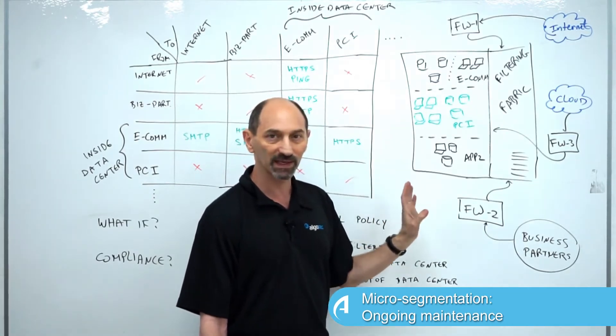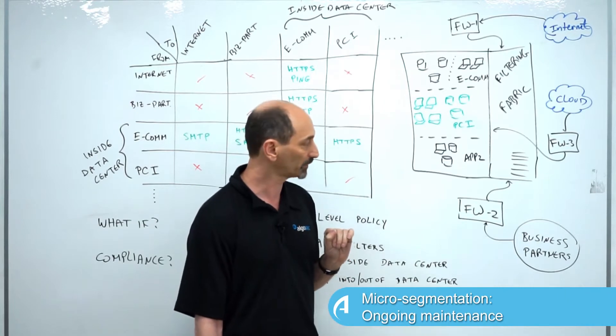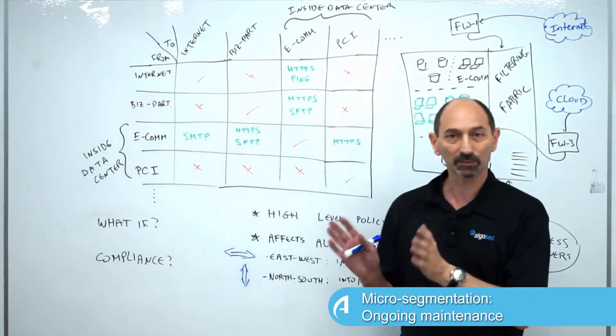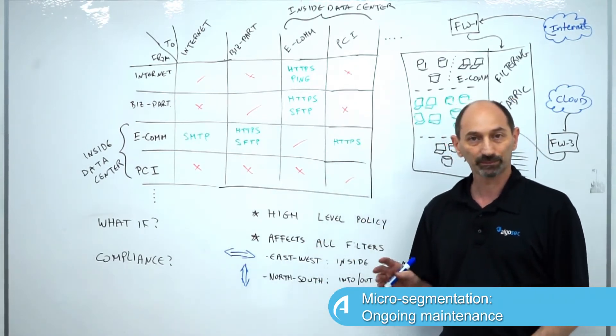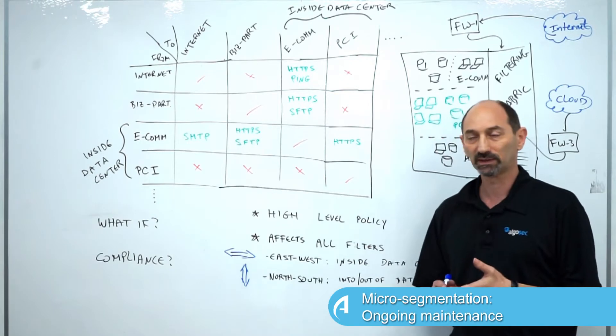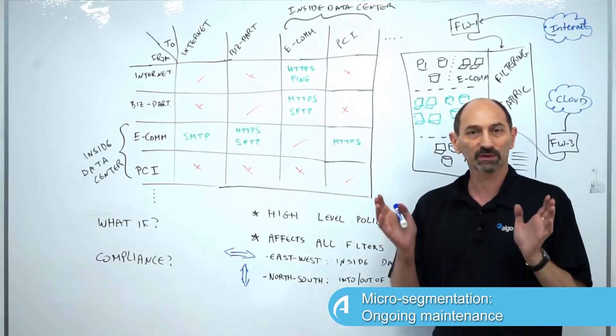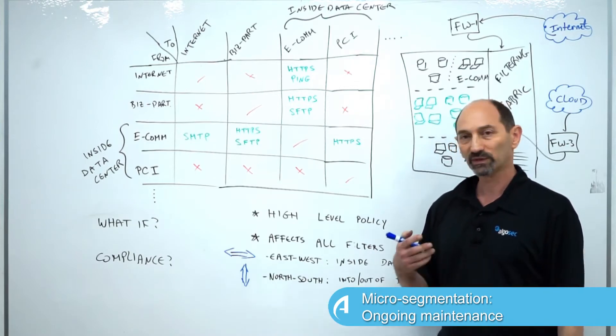Let's switch gears and think about what's happening in another part of the organization, which is the information security team. People in the information security team need to define a high-level policy of what types of traffic are allowed in the organization.